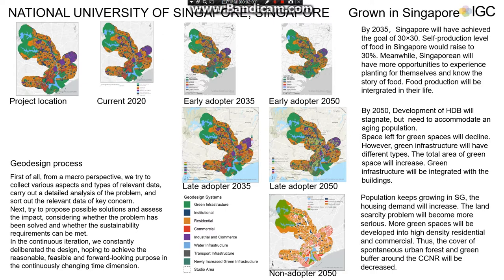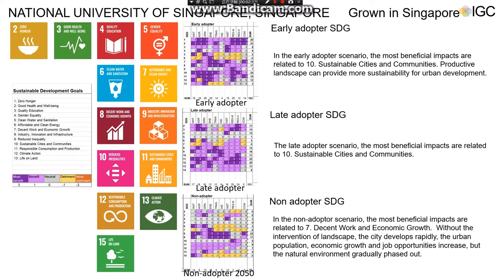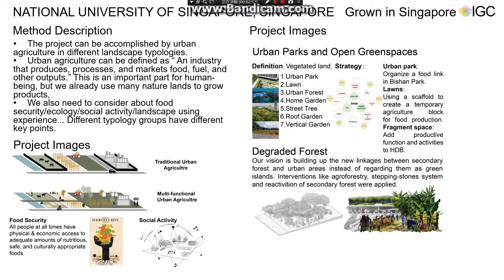By 2035, Singapore will have achieved the goal of 30 by 30, which means Singaporeans will have more opportunity to experience planting for themselves and food production will be integrated into their lives. By 2050, green infrastructure will be integrated with buildings, increasing the total area of green space. Throughout the whole geodesign process of our project, the most beneficial impact for both early adopter and late adopter SDG is number 10, sustainable cities and communities. Meanwhile, the non-adopter SDG is number 7, decent work and economic growth.